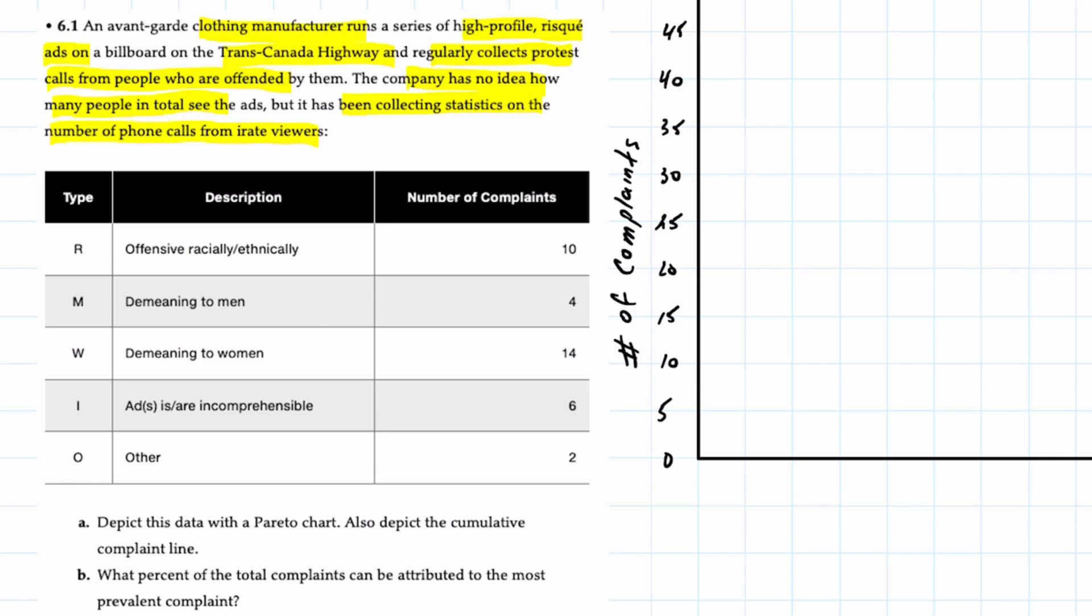In essence the company has identified five categories of complaints: offensive, demeaning to men, demeaning to women, incomprehensible, and other. And then here in the last column the number of each type of complaint.